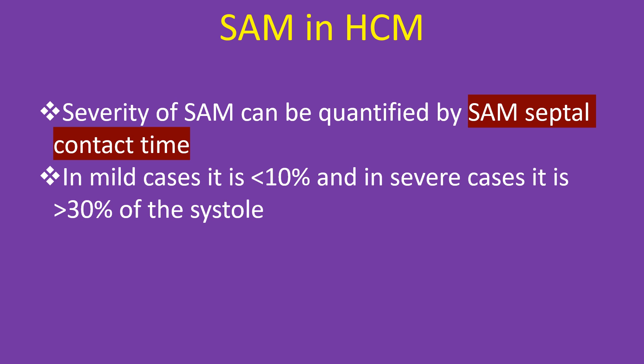The severity of SAM can be quantified by SAM-septal contact time. In mild cases it is less than 10% of systole, and in severe cases it is more than 30% of systole.